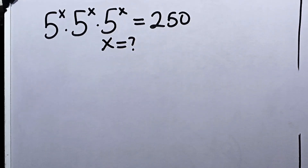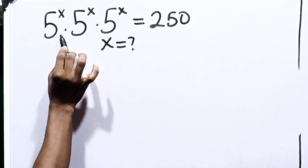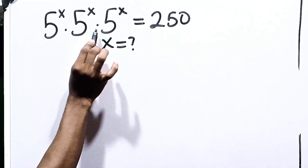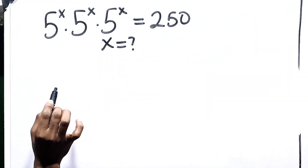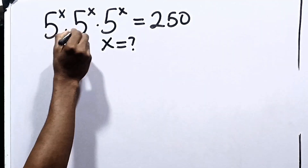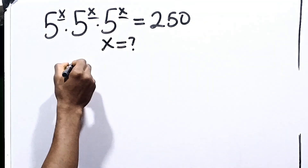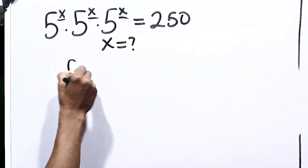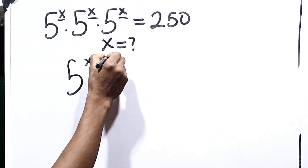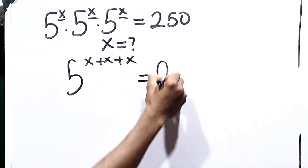First things first, when you see those dots here, it means multiplication. So we go ahead and say 5 raised to the power x times 5 raised to the power x times 5 raised to the power x. When you have multiplication in indices, you add the powers. So we have 5 raised to the power x plus x plus x, equal to 250.